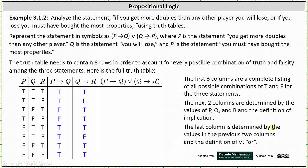The last column is determined by the values in the previous two columns and the definition of disjunction. 'If p then q, or if q then r' is false only when both 'if p then q' is false and 'if q then r' is false. Looking at the eight rows, none of them have false for both implications simultaneously, which means every row of the final column is true — indicating the Monopoly statement is always true.